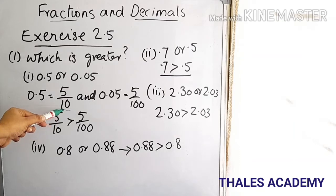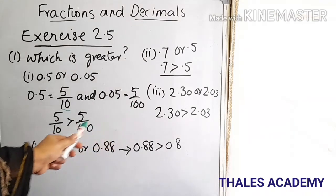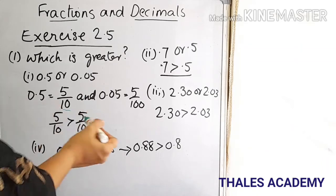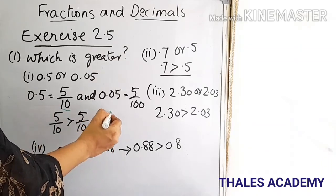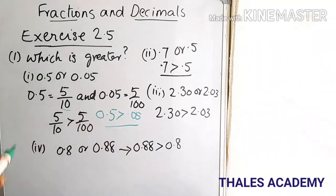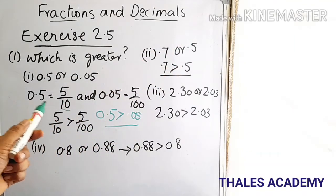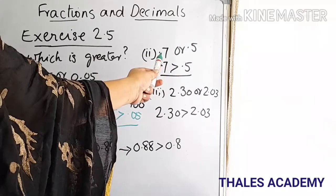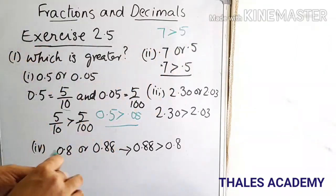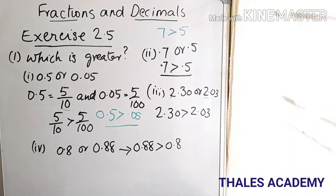Exercise 2.5: Which is greater, 0.5 or 0.05? Here 0.5 means 5/10 and 0.05 means 5/100. Since 5/10 is greater than 5/100, 0.5 is greater than 0.05. Next question: 0.7 or 0.5 — comparing the digits right of the decimal, 7 is greater, so 0.7 is greater than 0.5.